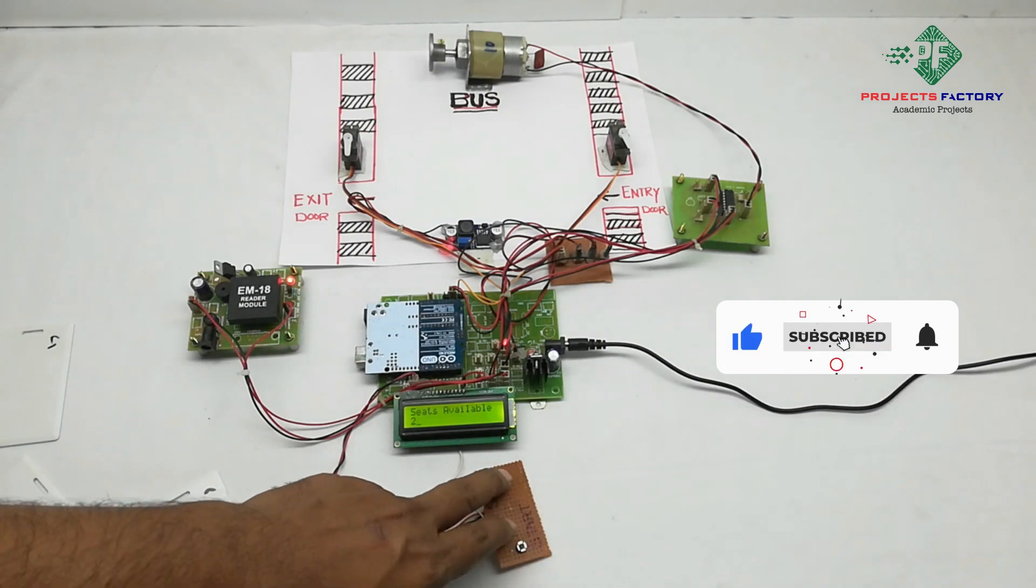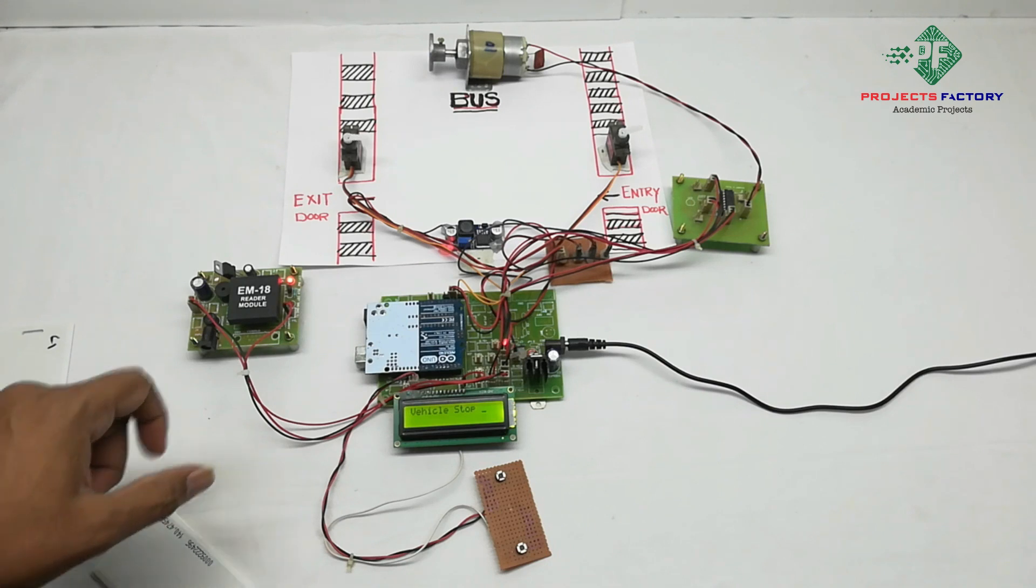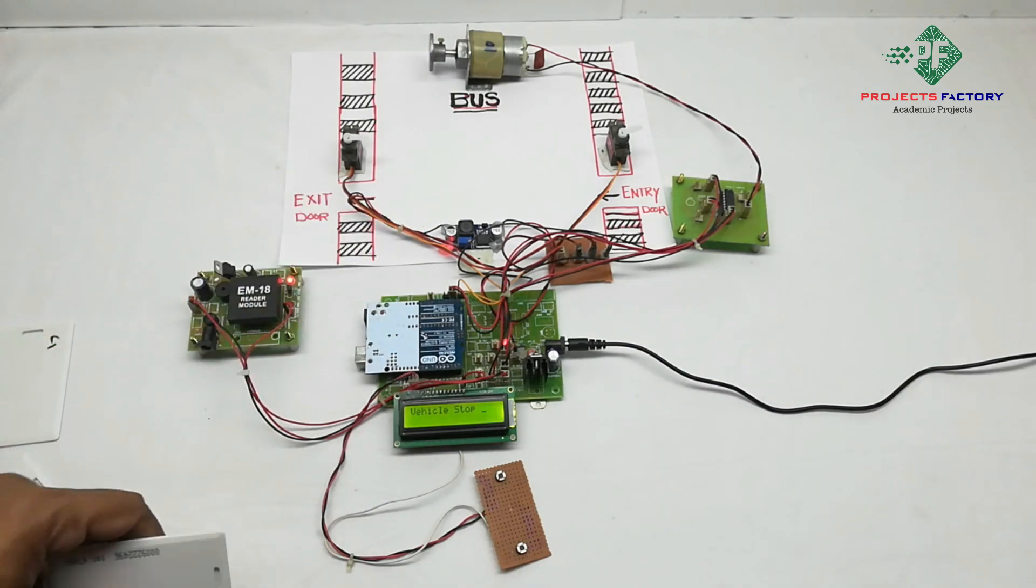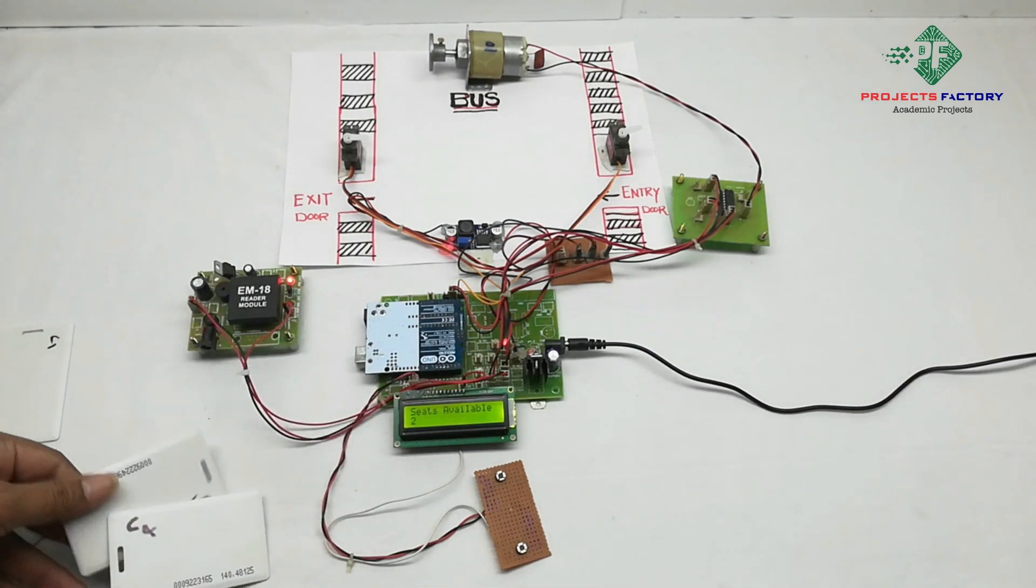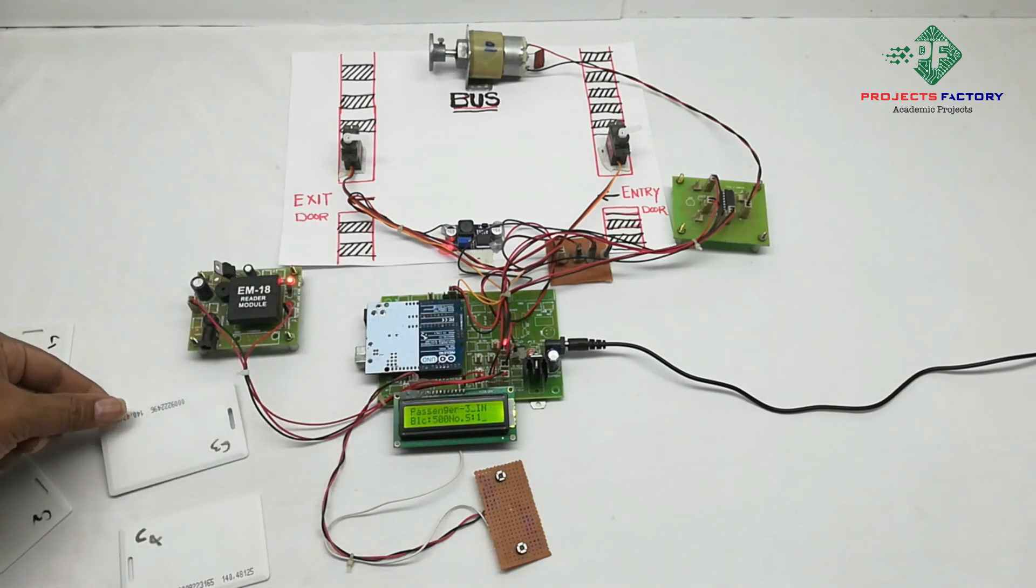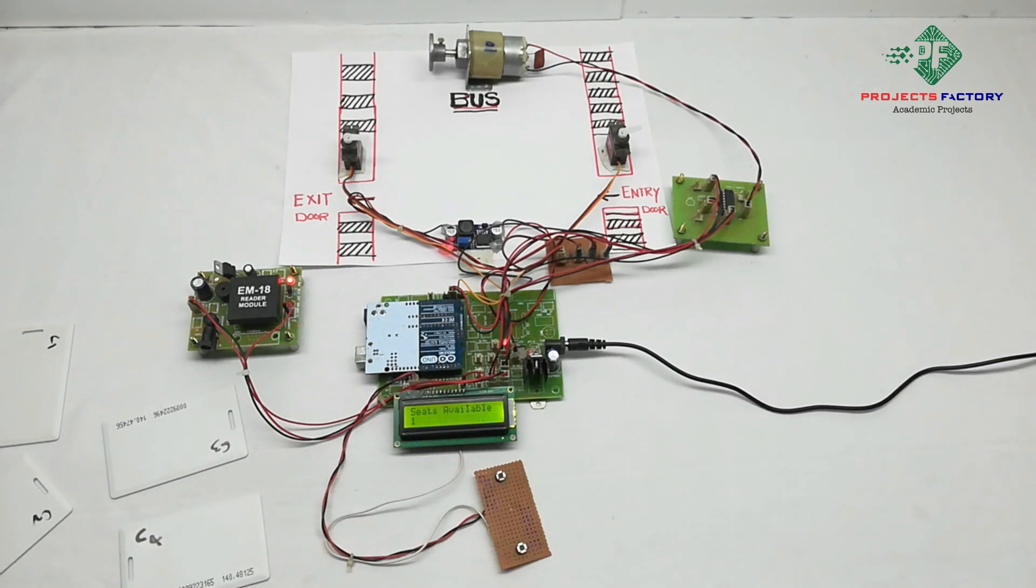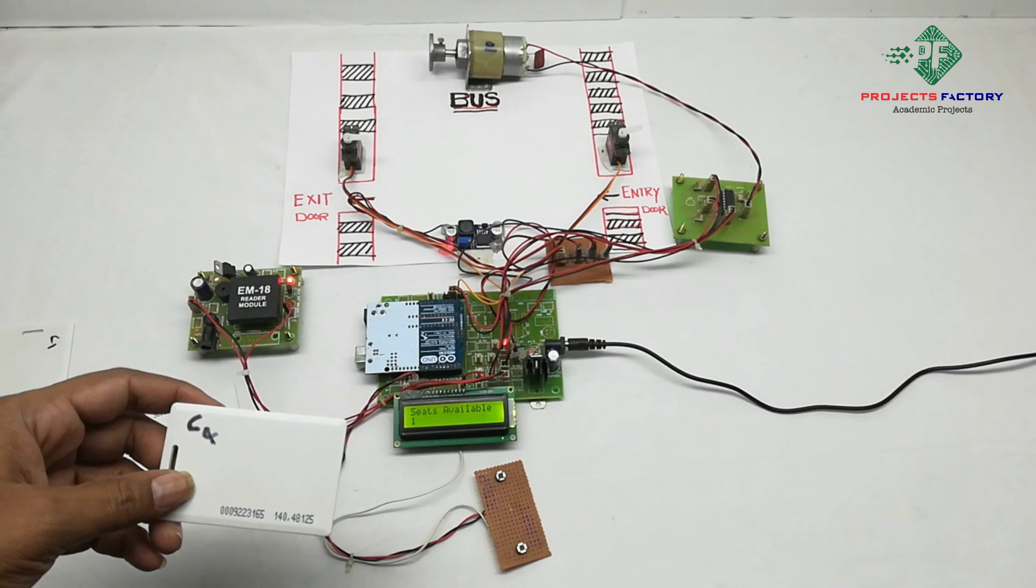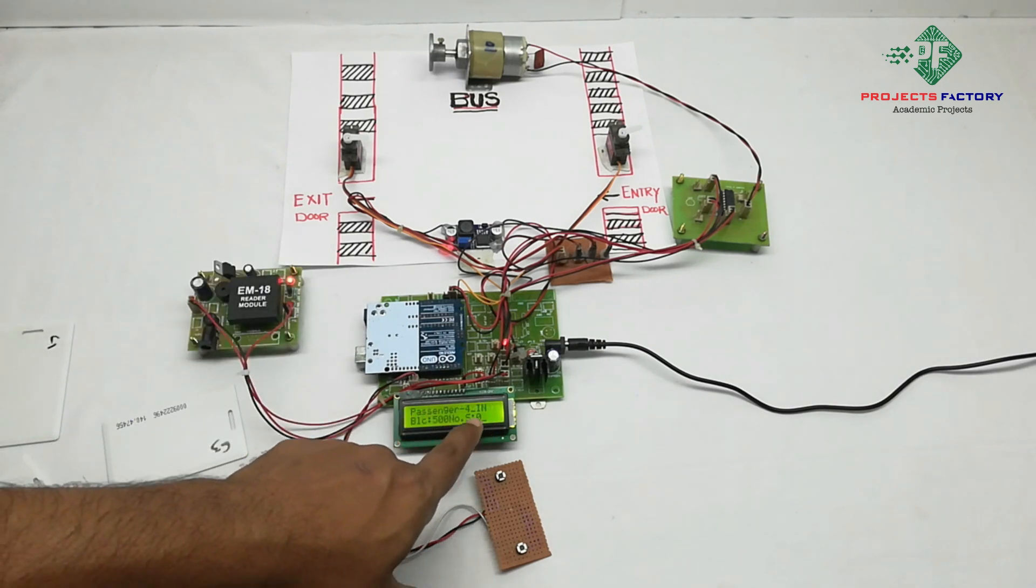Vehicle stops, doors open. At this stop, passenger 3 and passenger 4 in. First we swipe passenger 3 - seat availability 1, then passenger 4 - seat availability 0.